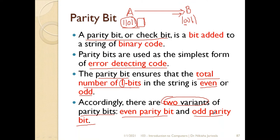So what will be the scenario? Let's see the same example using even parity bit. Even parity bit means that in the sequence we create, the total number of ones should be even. Now in our data 1, 1, 0, 1, 1, how many ones are there? One, two, three, four — it is already even.